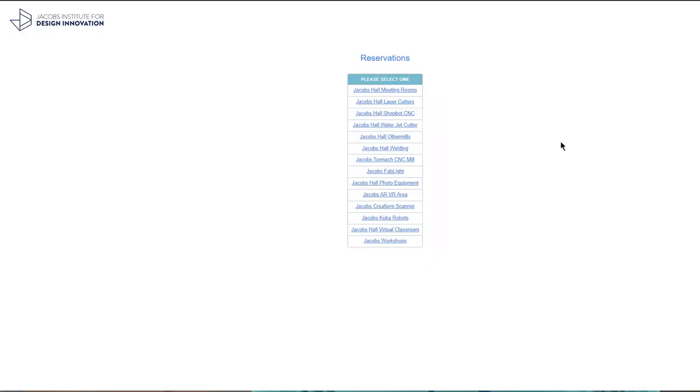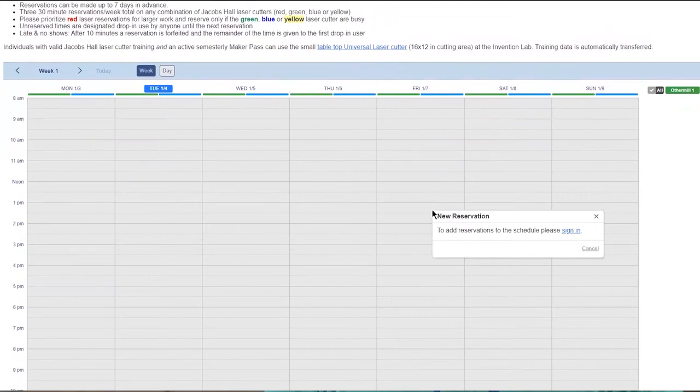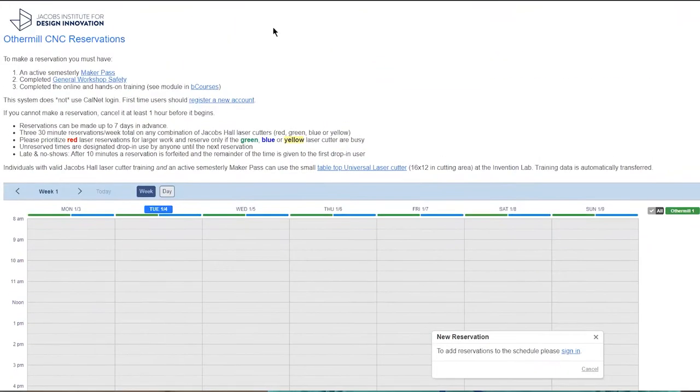You'll need a few things to get started. The first is to reserve time on the machine at reserve.jacobshall.org. As with any CNC, you always want to book double the amount of time that you think you'll need. You also need to have designed your parts already, and generated the CAM files.